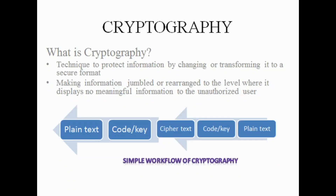Cryptography is basically a technique to protect information either by changing or transforming the word format to a secured format. It's actually converting a plain text into a cipher text. Cryptography uses various techniques or methodologies to convert plain text into cipher text.